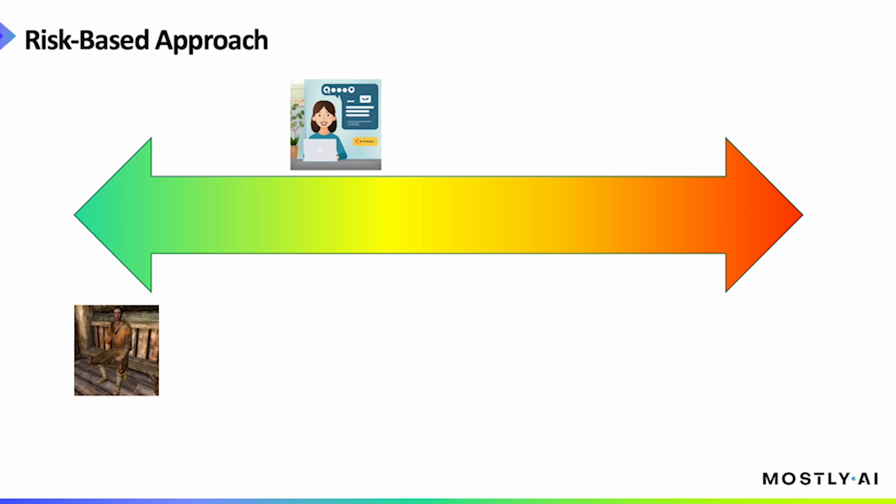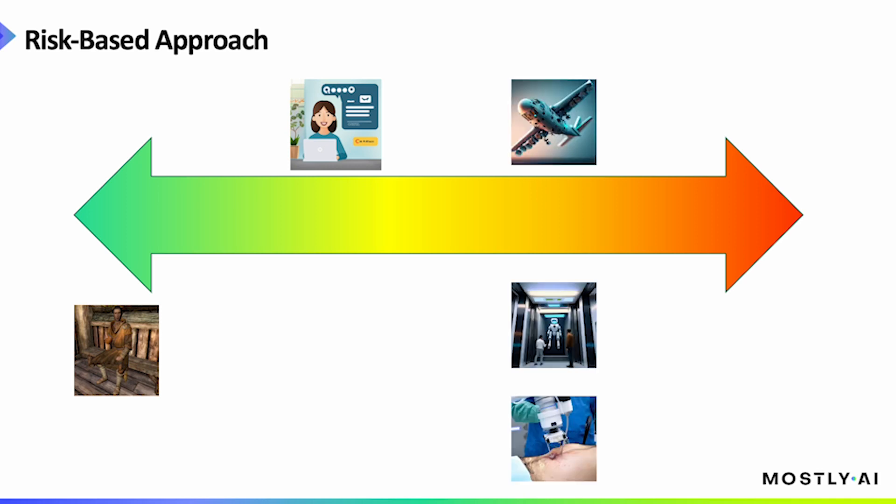But the main focus of the AI Act is on high-risk systems, such as AI systems used in products that are subject to specific product liability rules, and other AI systems posing a significant risk to health, safety, security, or to fundamental rights.